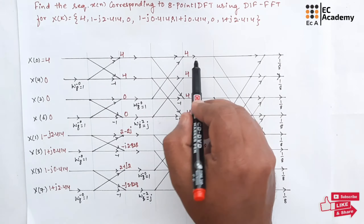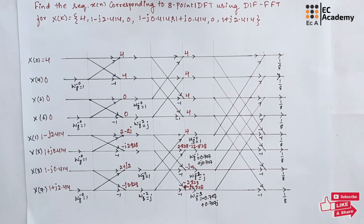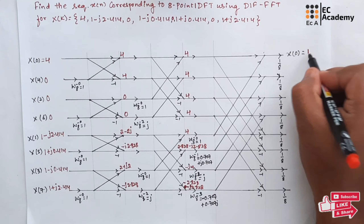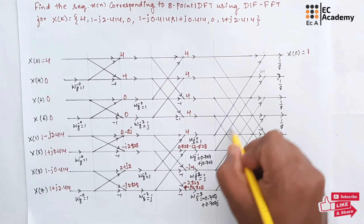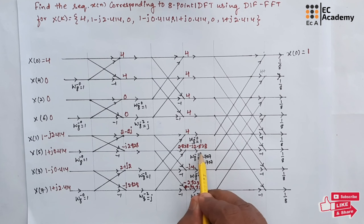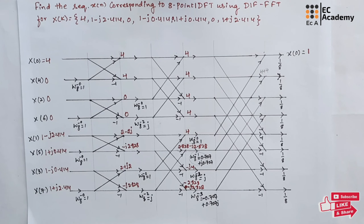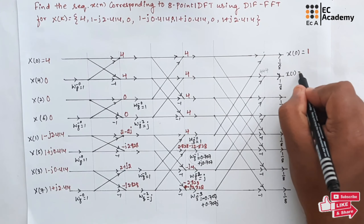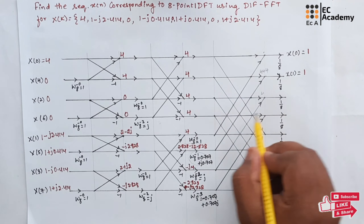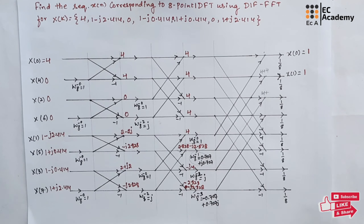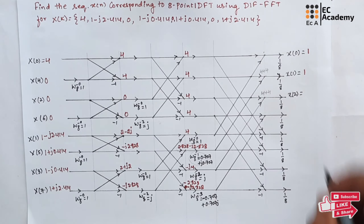To find the output at this point, it will be 4 plus 4 divided by 8, so x of 0 will be equal to 1. Output at this point: if you multiply this term with twiddle factor value W8 to the power of minus 1, you get 4, so it will be 4 plus 4 equals 8, and 8 divided by 8 is 1, so x of 1 is equal to 1. To find the output at this point: 4 plus minus j4 multiplied by j, it will be 4, so 4 plus 4 is 8, and 8 divided by 8 is 1, so x of 2 will be equal to 1.